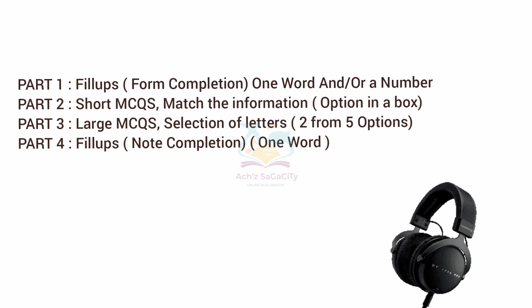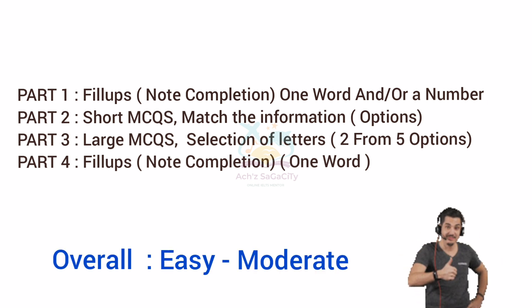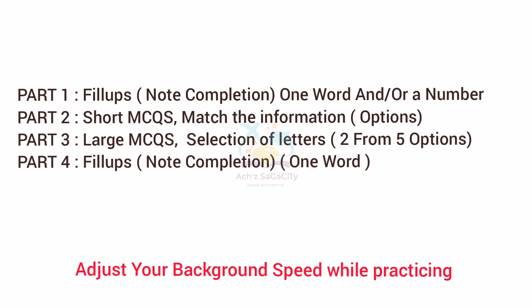Moving on to Part 4, you will hear a monologue and this time you can expect a fill-up type question — one word only — in the form of note completion. Overall, your listening section will be easy to moderate level. You should do all the Cambridge materials, specially Cambridge 10 and above, up to 16, and also go through the student's version of the Cambridge guide. Adjust your background speed to 1.25x — it will be easier for you in the real exam.